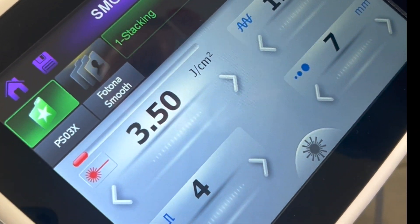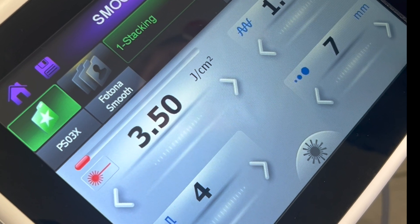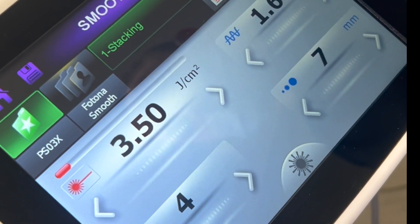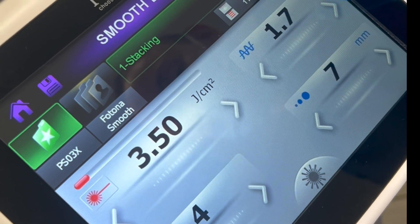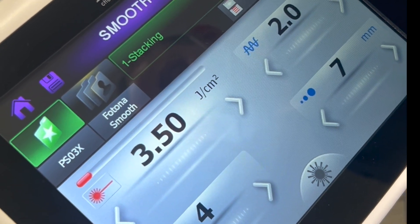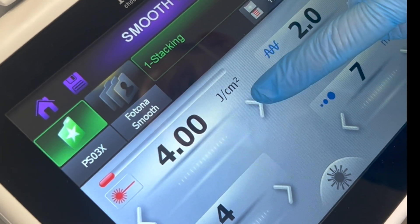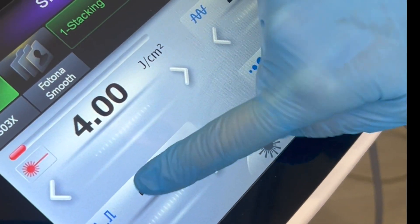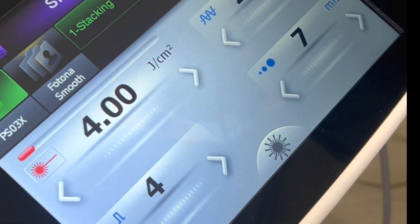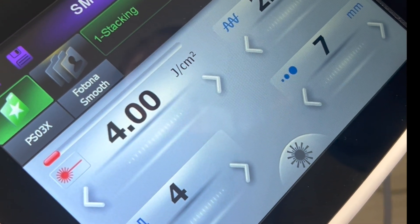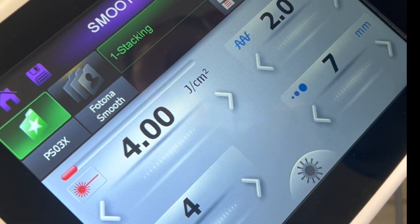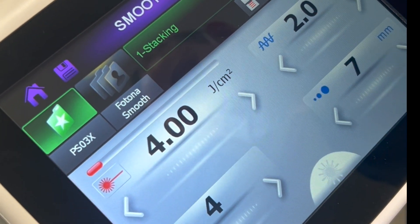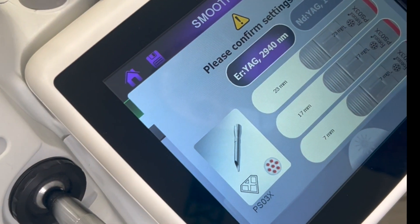This is where you can input your settings. These are the presets set by the device, so you can adjust your speed, your energy setting, and ensure that your pulse width and your spot size is as you need it. When you're happy with that, press and hold down the sun, and that means the laser is now live and ready to go.